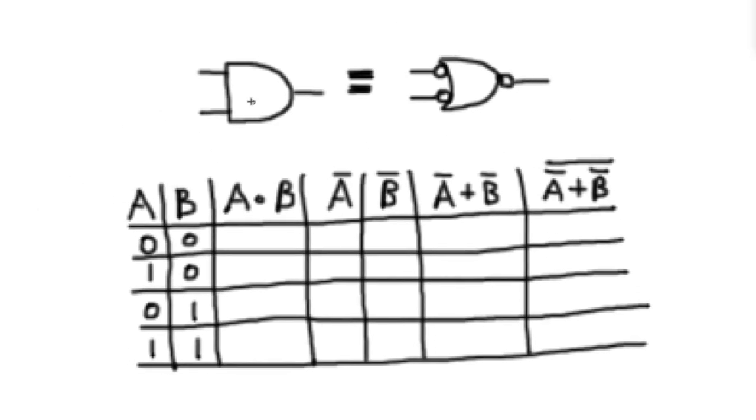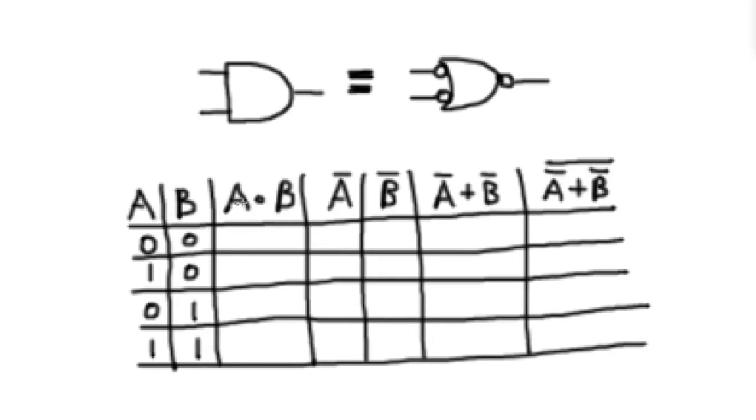And if you don't believe me, we can actually prove this here. So let's go through the truth table for the AND gate first. So the AND gate is, of course, going to be A and B. A and B are 0, so that's going to be a 0. B is 0, so that's a 0. A is 0, so that's a 0. A and B are both 1, so that's a 1.